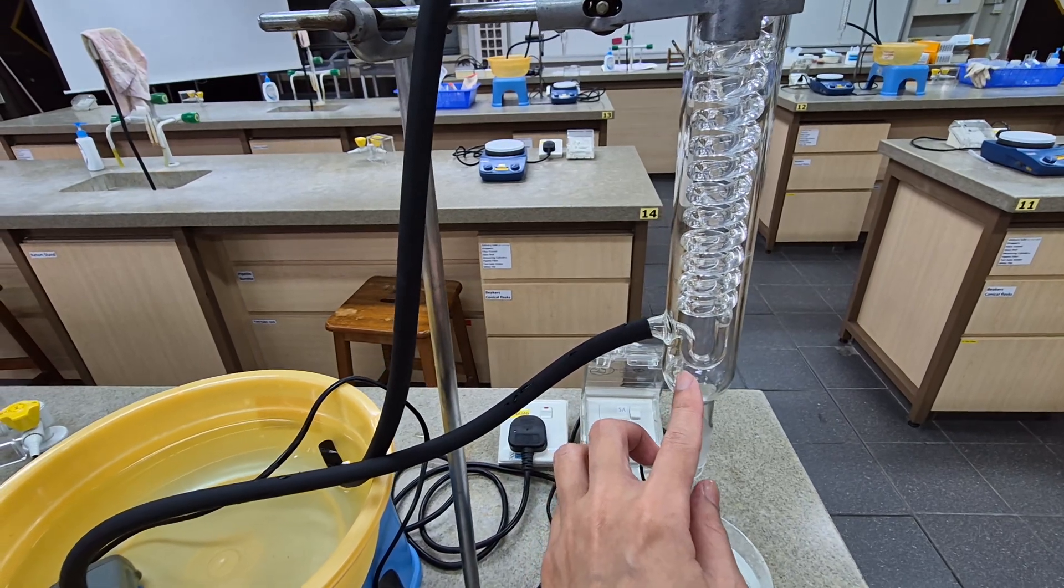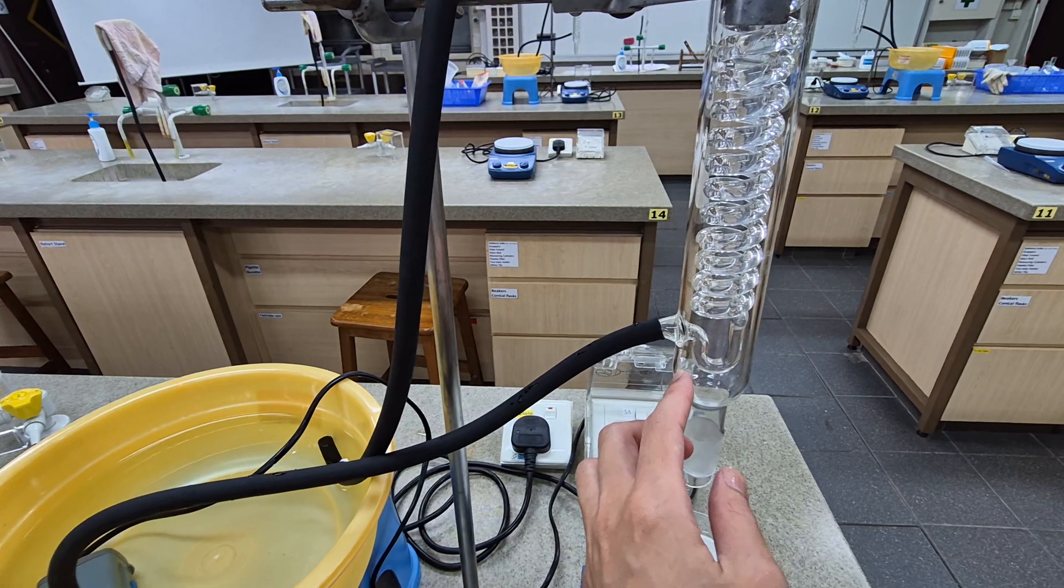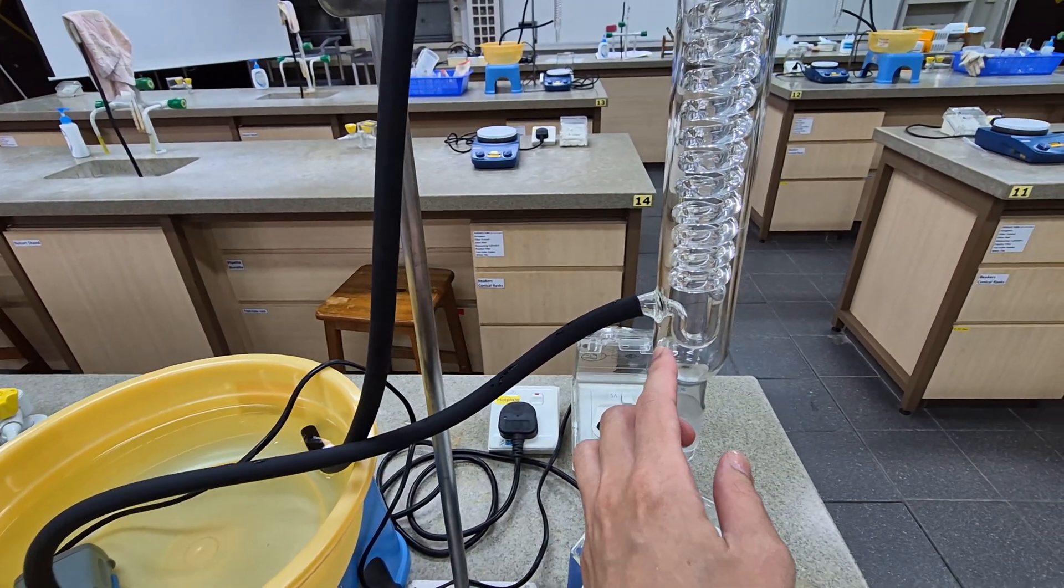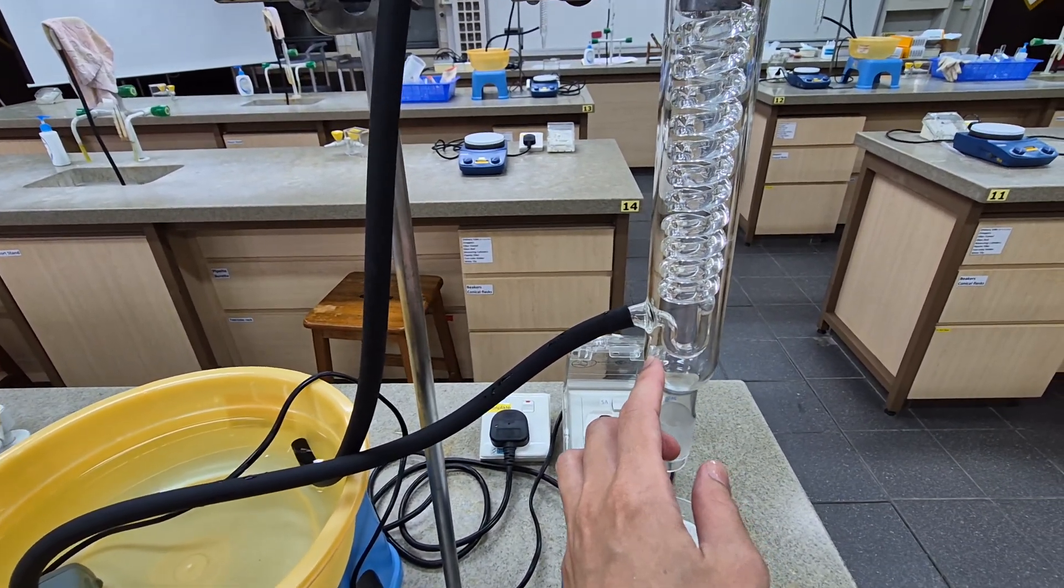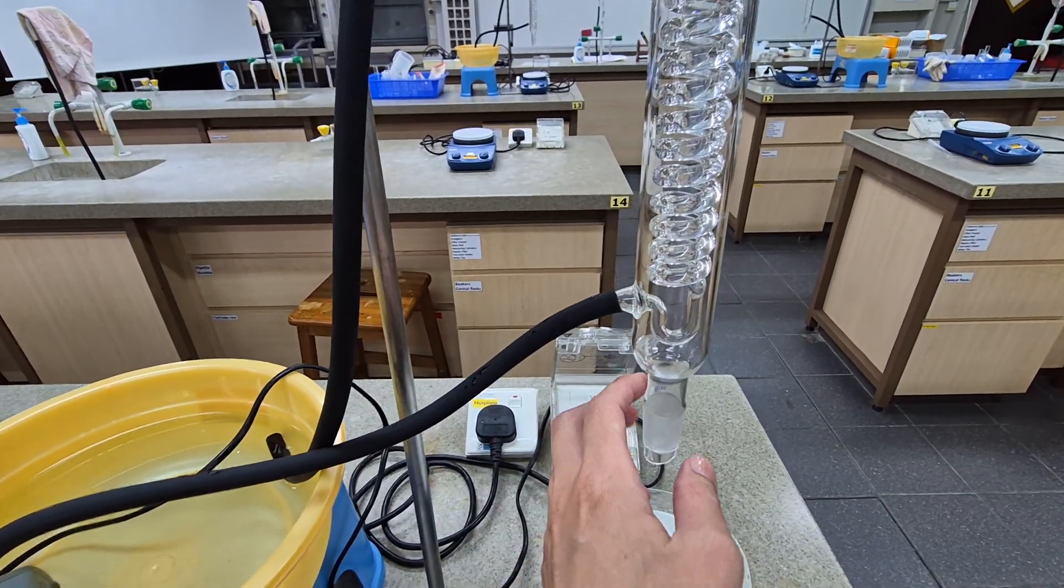This way they will be condensed back into the round bottom flask. So later on when the round bottom flask is set up below, you will be able to see how the reflux takes place.